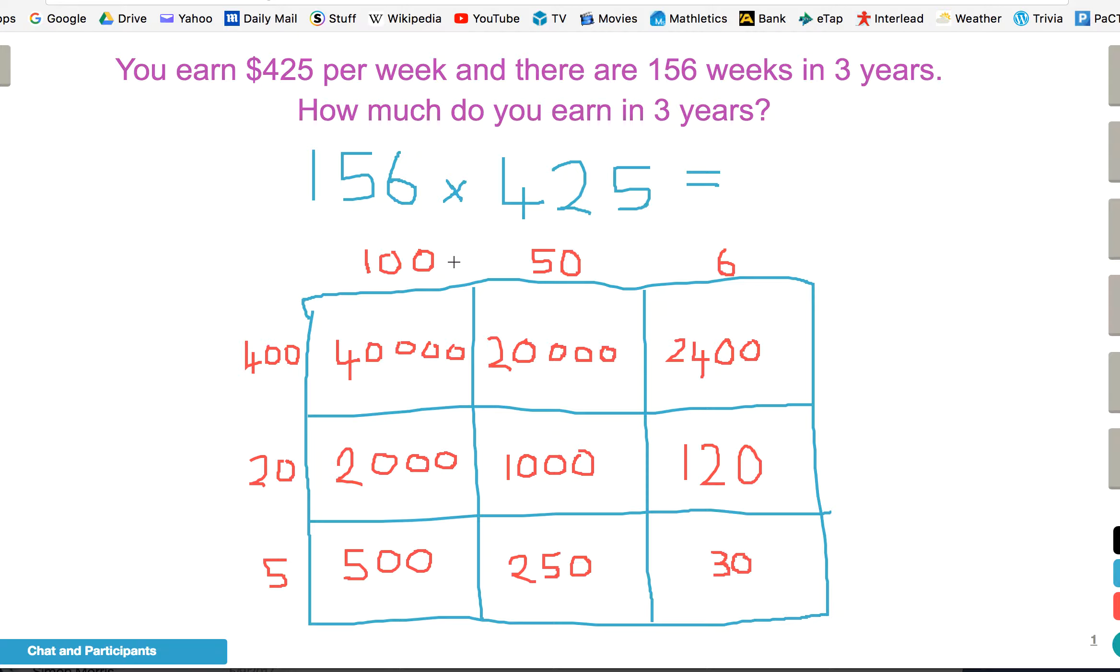And then probably the hardest part of this is adding it all up at the end. You can, if you want, hold all the numbers in your head. I like to do it in stages. I do the thousands first: 40,000, another 20,000 is 60,000, 62,000, 63,000, 64,000, 65,000. I'm just going to write that down: 65,000.